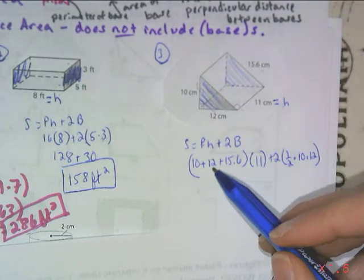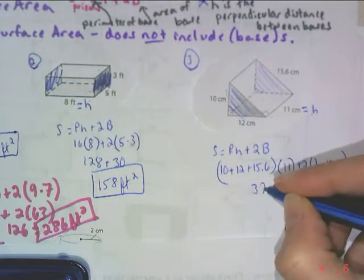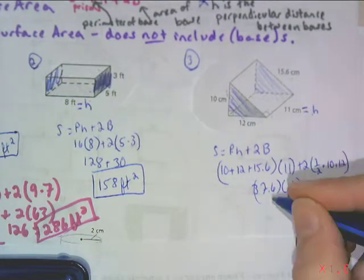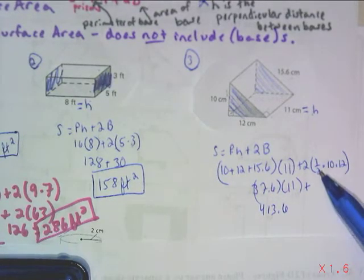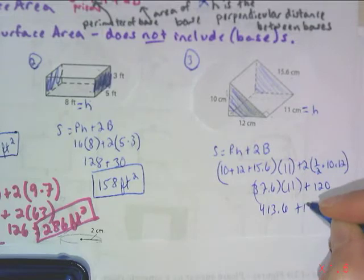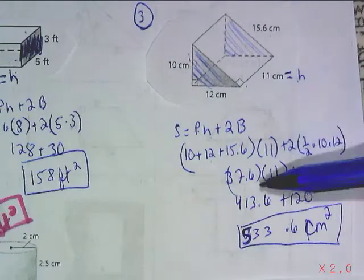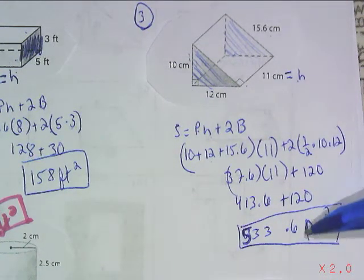So 10 plus 12 plus 15.6 gives 37.6 times 11. Then for the area of the triangular base, it's half base times height: half of 10 times 12, which is 5 times 12, giving 60. Doubled is 120. Combined, 37.6 times 11 plus 120 gives a total surface area of 533.6 centimeters squared.